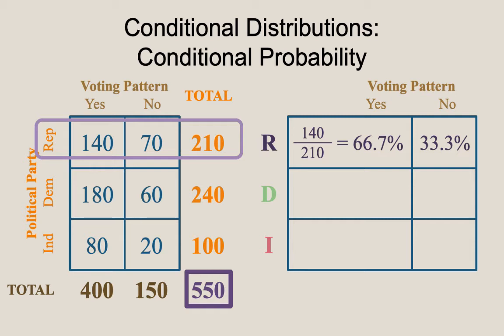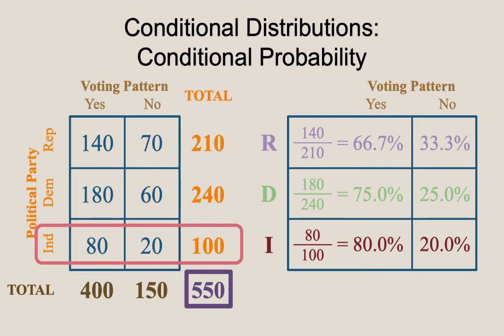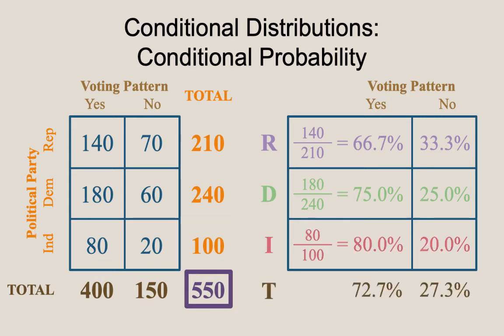I could do the same thing attending only to the Democrats. Looking only at Democrats, I have 180 out of 240, which is 75%, meaning 25% of the Democrats indicated not having voted. For Independents, 80 out of 100 voted, which is 80%, meaning 20% did not vote. The marginal probabilities show that 72.7% of the total sample voted and 27.3% did not. Each row represents its own conditional probability distribution.